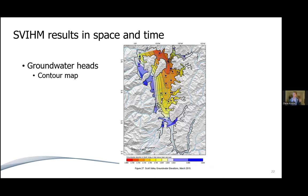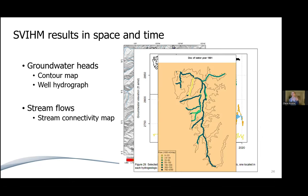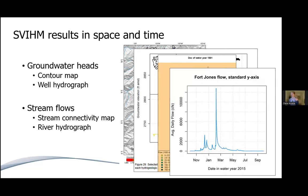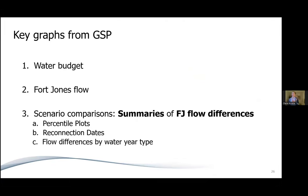This is still a lot of information. To parse these results, I would argue the key graphs are: first, the water budget; second, the flow at the Fort Jones gauge; and third, various ways to summarize that Fort Jones flow and differences between different simulations. So let's walk through these one by one.